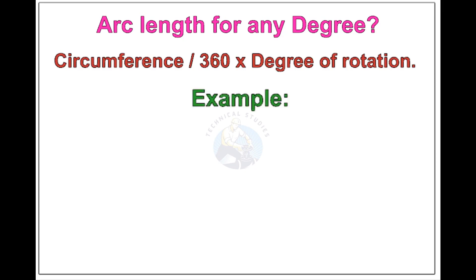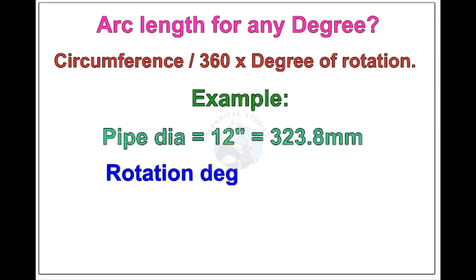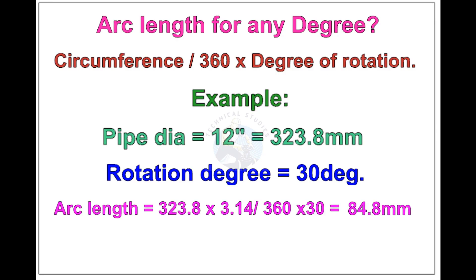Let us check the arc length of 12 inch pipe rotated 30 degrees. Apply the formula. The answer is 84.8 millimeters.